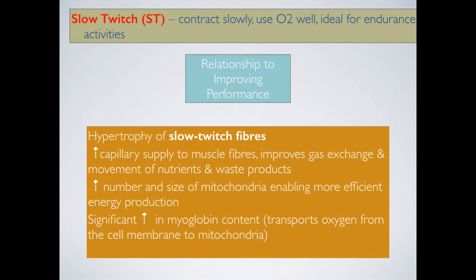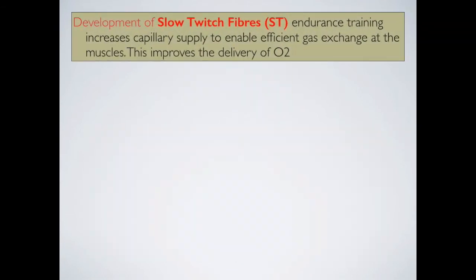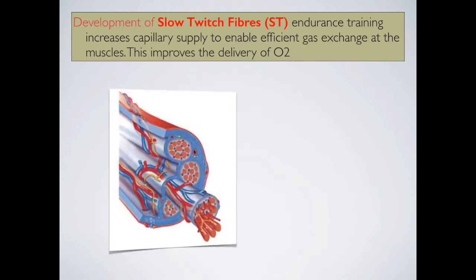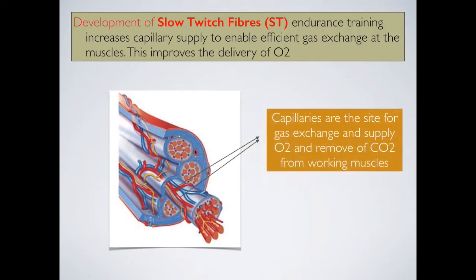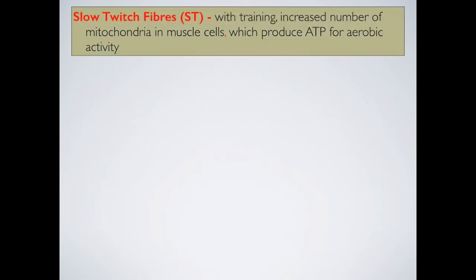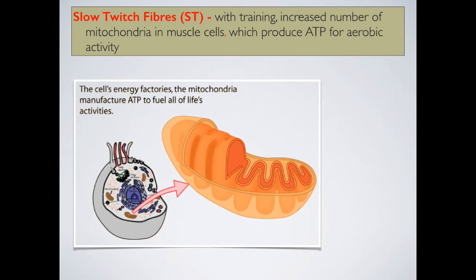As a result of training, hypertrophy of slow-twitch fibres occurs. Endurance training increases capillary supply to enable efficient gas exchange at the muscles, improving oxygen delivery. Capillaries are the site of gas exchange, supply of oxygen, and removal of CO2. The capillary beds and their efficiency are much better in slow-twitch fibres than fast-twitch fibres, and with training these capillary beds increase in size and function. With training, the number of mitochondria in muscle cells also increases — the mitochondria is the powerhouse of the muscle cell, producing the ATP required for movement.